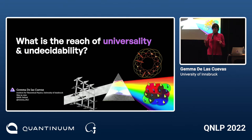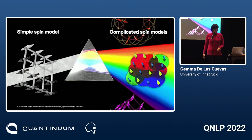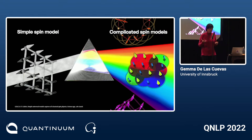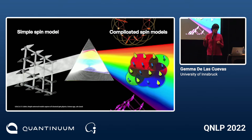I'd like to focus first on universality. For me personally, this story started with the discovery that some spin models that appear to be simple can actually simulate all other spin models — namely those that appear to be much more complicated — as in the 2D Ising model with fields can simulate models on high-dimensional spins, many-body interactions, or high-dimensional lattices.